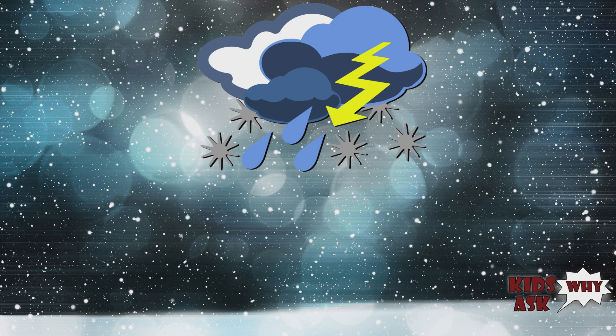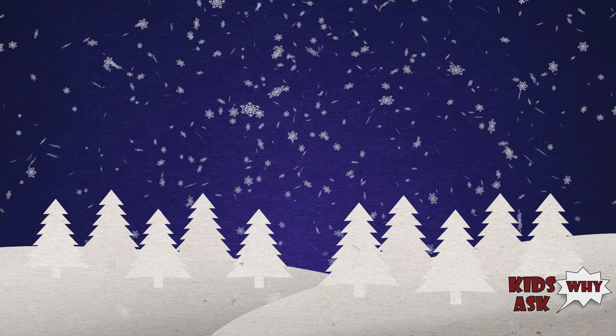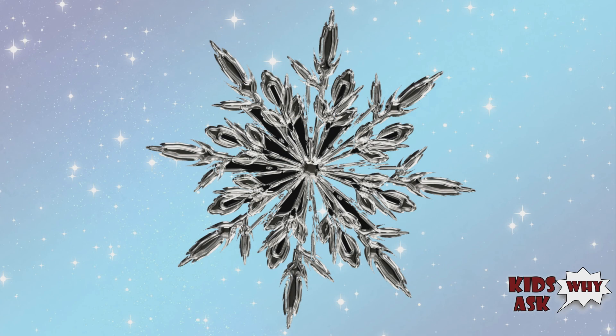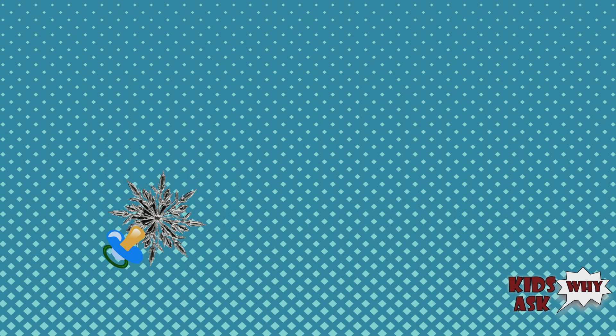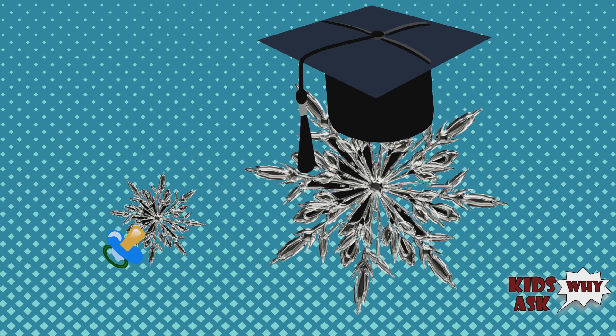A blizzard is a long-lasting snowstorm with very strong winds and intense snowfall. Snowflakes are made up of crystals of ice that have formed around bits of dirt in the air. The snowflakes start out very small and grow as the snow crystals grow.